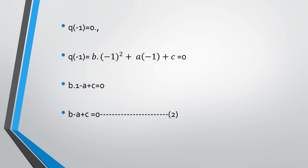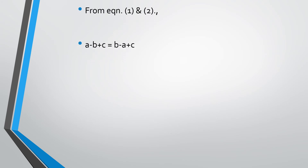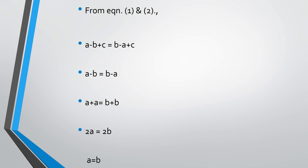Both equation 1 and equation 2 are equal to 0, so they are said to be equal. Equalizing both equations: a minus b plus c is equal to b minus a plus c. Simplifying, a minus b equals b minus a. Transposing minus a to the left and minus b to the right gives a plus a equals b plus b, that is 2a equals 2b. Cancelling 2 from both sides, a is equal to b. We have proved that a and b are equal.